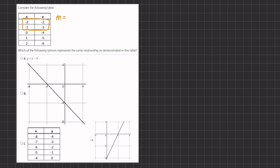So we have y1 which is negative two minus y2 which is negative three, divided by x1 which is negative two minus x2 which is negative one. A negative and a negative create a positive, so we have negative two plus three which gives us positive one, divided by negative two plus one which gives us negative one. A positive one divided by a negative one gives us negative one.